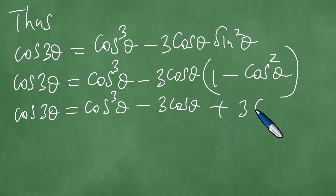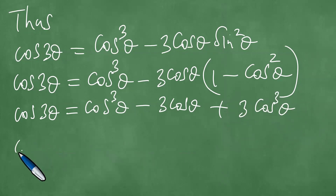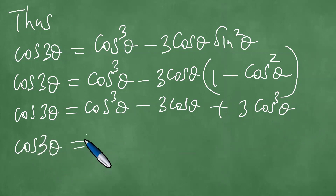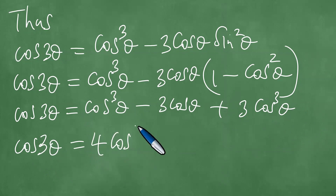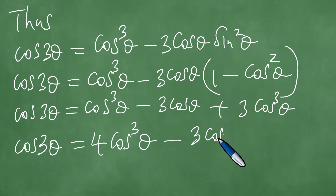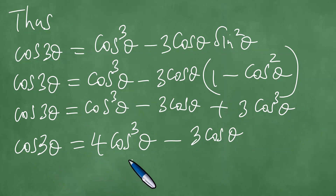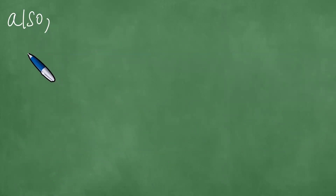Looking at cosine 3 theta equals cosine cubed theta minus 3 cosine theta sine squared theta, we substitute sine squared theta equals 1 minus cosine squared theta. This gives cosine 3 theta equals cosine cubed theta minus 3 cosine theta times one minus cosine squared theta, which simplifies to cosine cubed theta minus 3 cosine theta plus 3 cosine cubed theta. Adding these terms gives 4 cosine cubed theta minus 3 cosine theta. So cosine 3 theta equals 4 cosine cubed theta minus 3 cosine theta.